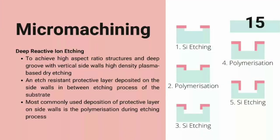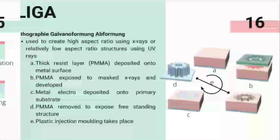Deep reactive ion etching (DRIE) is employed to achieve high aspect ratio structures and deep grooves with vertical side walls by high-density plasma-based dry etching. DRIE works similar to RIE, except that a protective layer is deposited between etching steps to achieve higher aspect ratio. The most commonly used method for deposition of protective layer on side walls is by polymerization between etching processes.